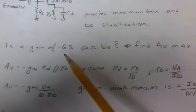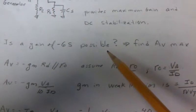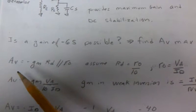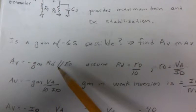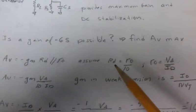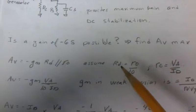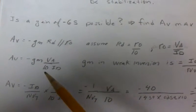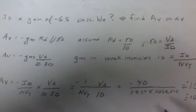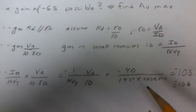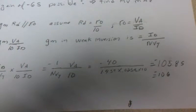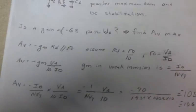First thing I want to know is: is minus 65 possible? Based on experience it should be in weak inversion. We'll go through these equations again: AV minus GM RD parallel with RO. We're trying to find the maximum possible gain without RO affecting you. That's RD smaller than RO. Plugging this in with GM in weak inversion, we can calculate for the 2N7000 that the maximum gain we're going to get is about 106, so yes it should be possible to do minus 65 gain.